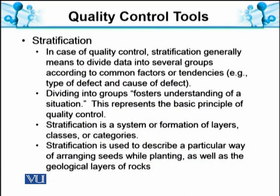In case of quality control, stratification generally means to divide data into several groups according to common factors or tendencies, such as a type of defect or cause of defect. Dividing into groups fosters understanding of a situation. This represents the basic principle of quality control.